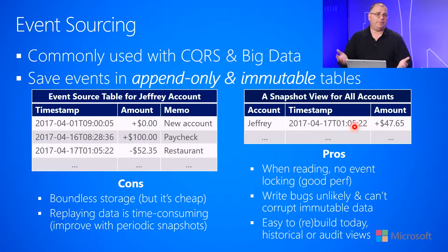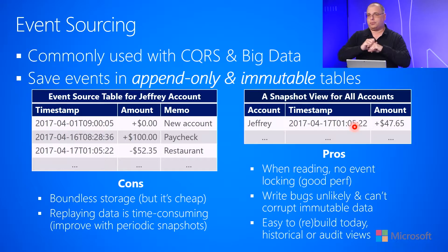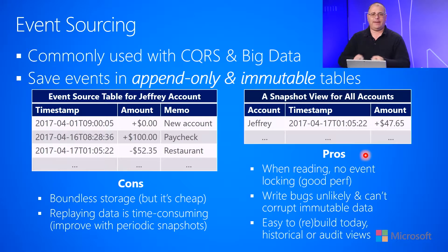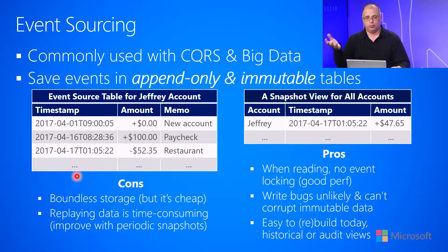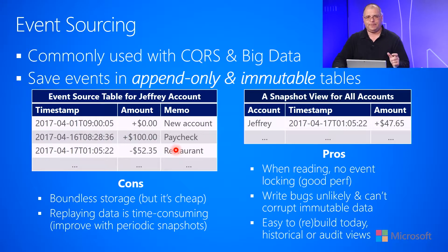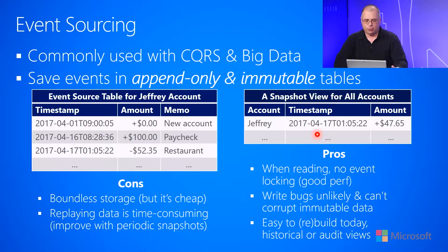If you did have a bug in the code that does the scans or produces the views, you could throw that code away, get rid of the view entirely, fix the bug, and then rerun the code over the tables to reproduce all the views correctly. So it's very unlikely that you will corrupt any of the important state. And if you do corrupt any of the less important state, you have the ability to rebuild it all from scratch, which is very appealing.